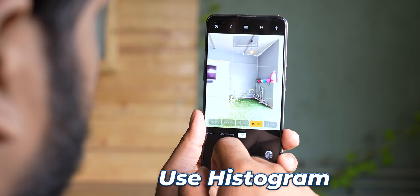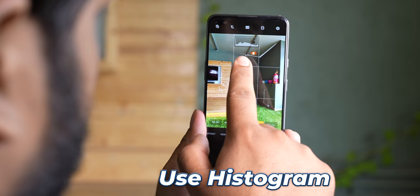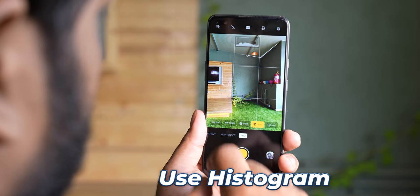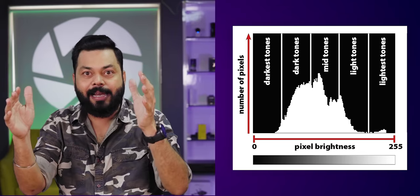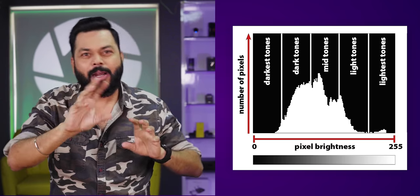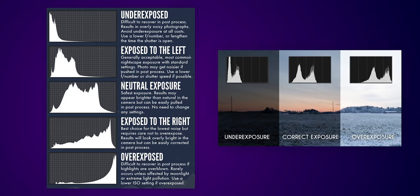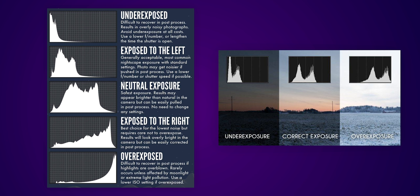For perfect exposure control, you can use the histogram. Now, it's a little advanced. If you know it — the histogram should be like a mountain in the middle, not pushed to the sides. If you see the mountain peak in the middle, that exposure is right. But histograms can vary — sometimes you need bright photos, sometimes dark photos. So look at the histogram if you know it.